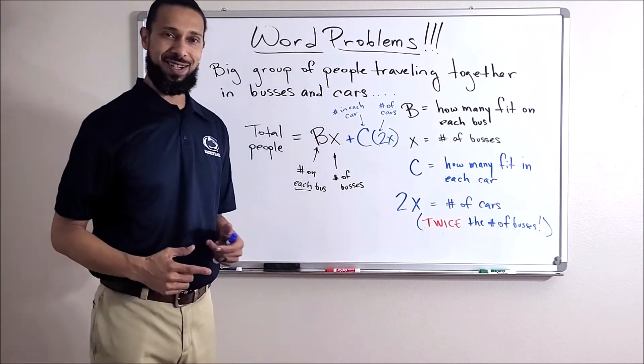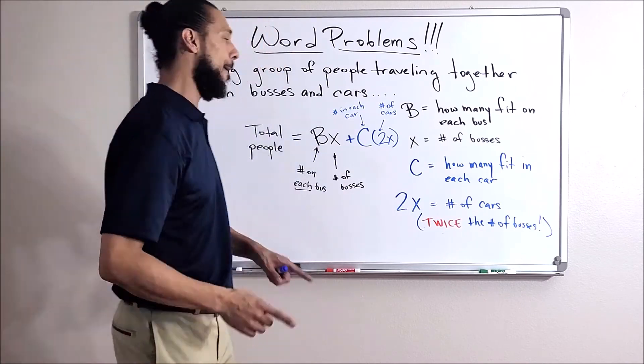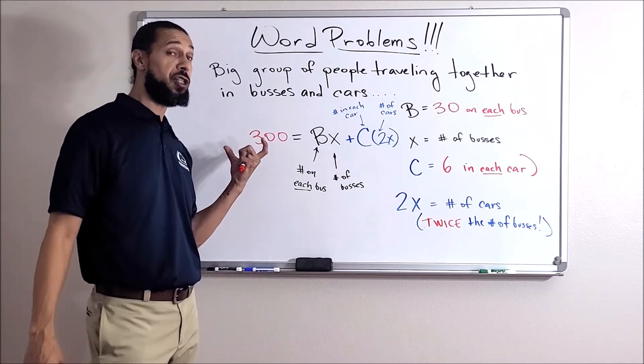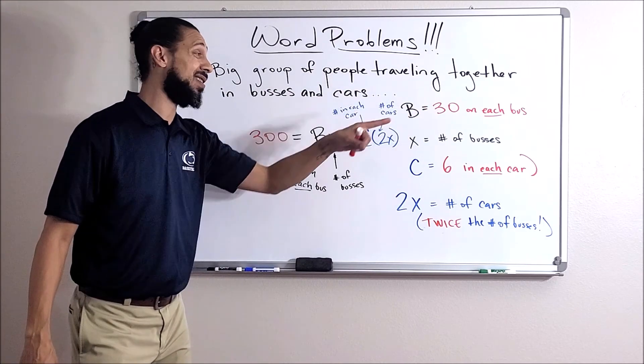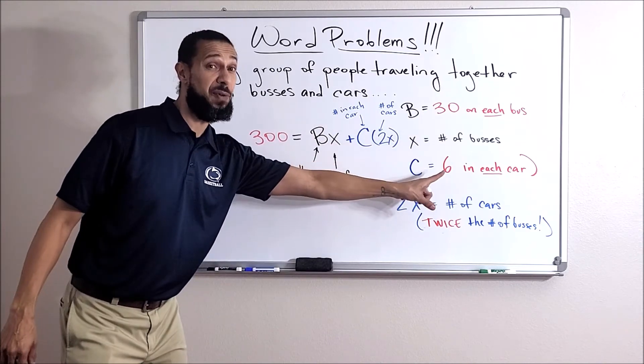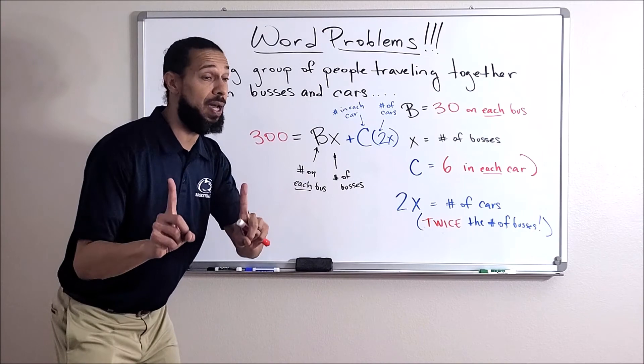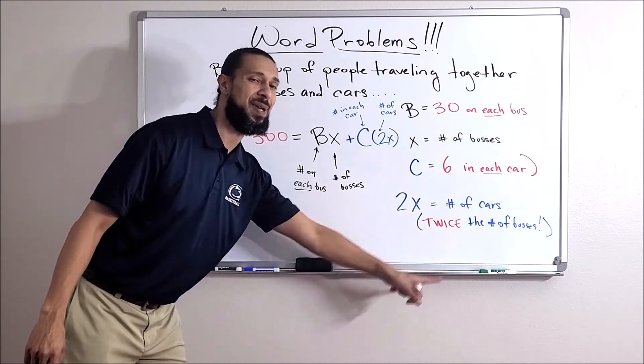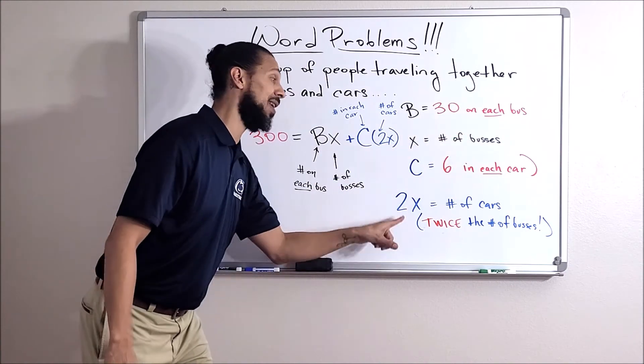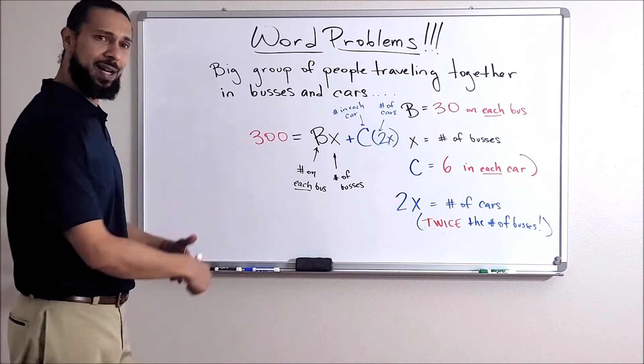Let's throw some numbers in here, you'll see what I'm talking about. Okay, here we go. So we have 300 people going on our trip. We could fit 30 people on each bus - we don't know how many buses are going yet. Six people fit in each car, we don't know how many cars are going yet. But we do know there are twice as many cars as there are buses. So if X is the number of buses, then 2X is the number of cars. That makes sense, good.